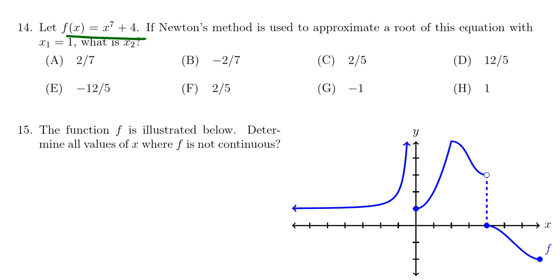We're supposed to use Newton's method to approximate the root of this function, that is its x-intercept. We're going to use the initial value x equals 1. If that's the case, what would be x2? What is the second number in this sequence?